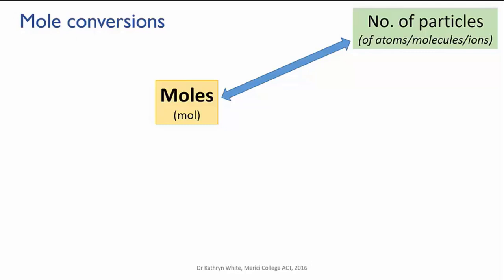Now, what's the conversion factor that gets us between moles and numbers of particles? Well, it's Avogadro's number, Na. 6.022 times 10 to the 23 tells us how many particles there are per mole.